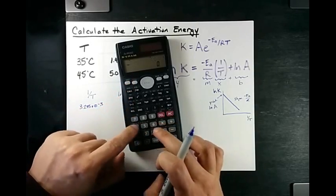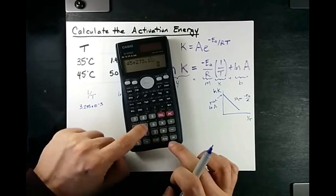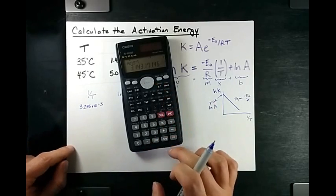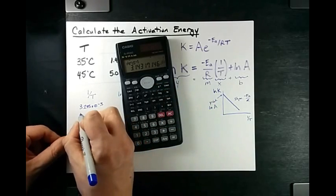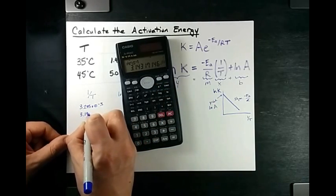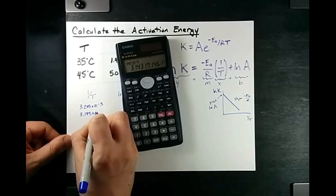And for 45, 45 plus 273.15, reciprocal, like 1 over, gives me 3.143 times 10 to the negative 3.